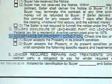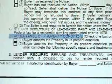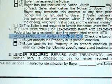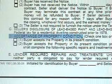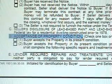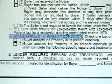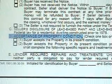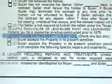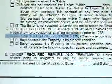Paragraph 7, section D is the acceptance of the property condition. This basically states: if the buyer accepts the property in its present condition, check number 1. Number 2 states that the buyer will accept the property in its present condition only if the seller, at seller's expense, completes repair work or treatment on the particular property prior to closing, and then you check box number 2.